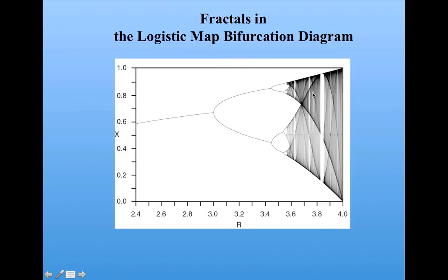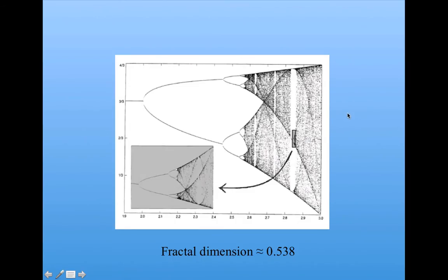You may have noticed that the logistic map bifurcation diagram has a tree-like structure, which indeed is fractal. For instance, if we blow up a little part of it here, some parts are quite self-similar. We blow up this part here and we see that it looks very much like the whole thing. People have calculated the fractal dimension to be about 0.5 — it has so many holes in it that it's not even quite one-dimensional.